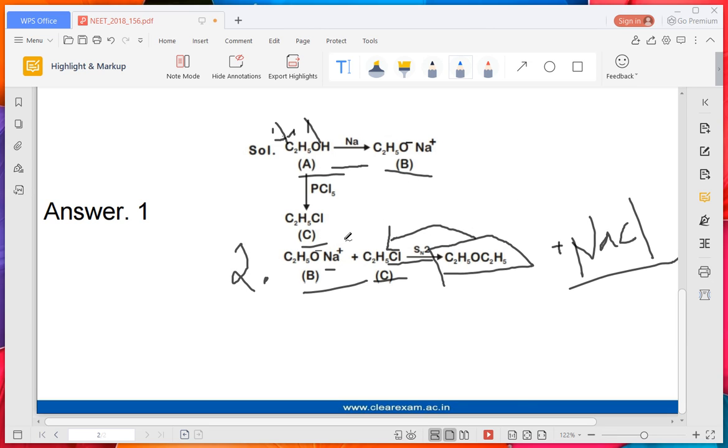NaCl is not written in the main product because it comes out as salt. The main product is this. This is only a byproduct. So C2H5OH when reacting with Na gives C2H5ONa, and this with PCl5 gives C2H5Cl.